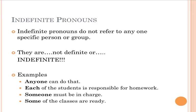For example, 'anyone can do that.' Well, who is anyone? Literally, it can be anyone — it's not a specific person. Therefore the pronoun we use, instead of saying 'any person,' is the pronoun 'anyone.' Another example: 'each of the students is responsible for homework,' or 'someone must be in charge.' By definition, 'someone' is indefinite — we don't know who that is. If we knew it was Tommy, we'd use 'he.' Since we're not sure, we use the indefinite pronoun 'someone.'